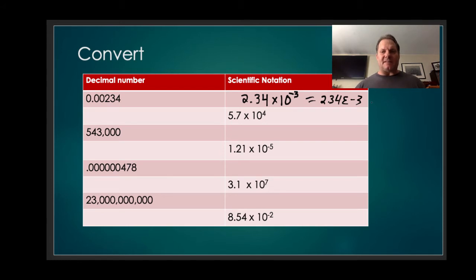E to a computer or a calculator means times 10 to the, so these things are equal. When we write it out, we always write times 10 to the. On a computer, we write capital E to mean times 10 to the. All right, so this guy down here now, 5.7 times 10 to the 4th. Is that a big number or a small number? That's a big number. You know it's 10 times 10 times 10 times 10.